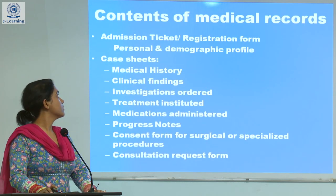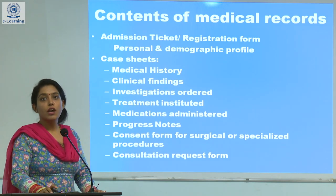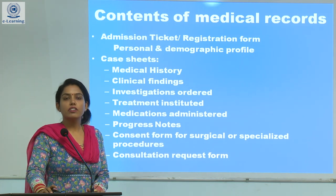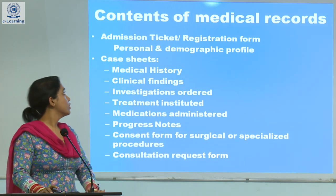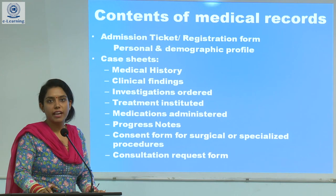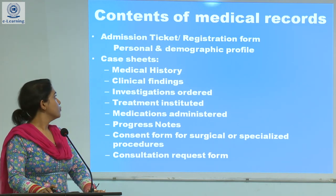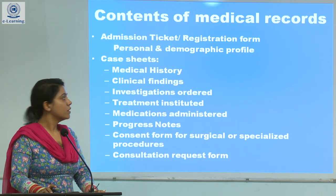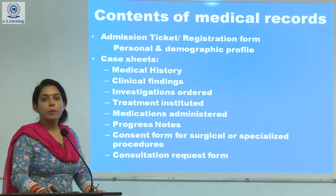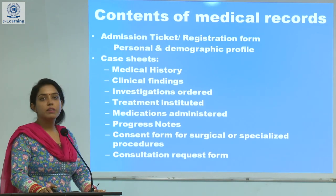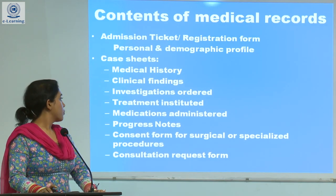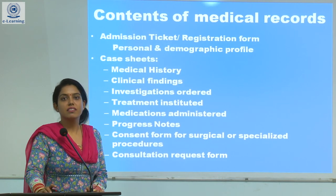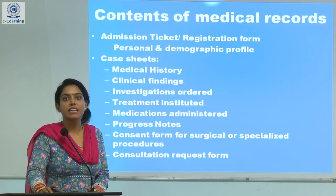Now we move towards the contents of the Medical Record. We divide the contents of Medical Record into two parts. First, admission ticket or the registration form, that includes the personal and demographic profile of the patient. Next, we move towards the case sheet, that includes the medical history of the patient, clinical findings of the patient, investigations ordered, treatment instituted, progress notes, and if the patient has gone under any surgical procedure, then consent form is a very necessary part of the medical record.